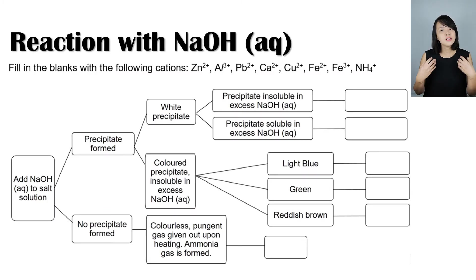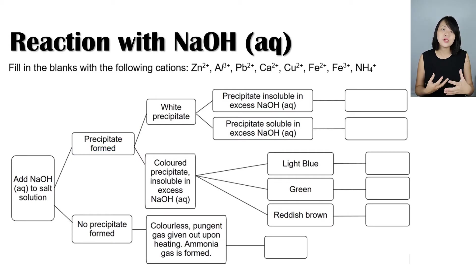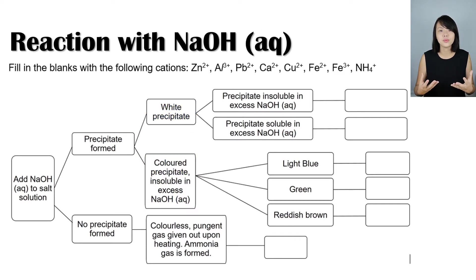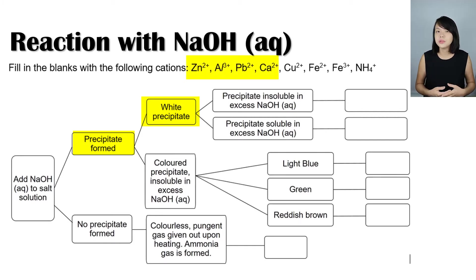Now let's move on to the case where a precipitate is formed when we add sodium hydroxide to the salt solution. Precipitates that are formed could be either white or colored. If a white precipitate is formed, the possible cations present could be calcium, zinc, aluminium, or lead(II).